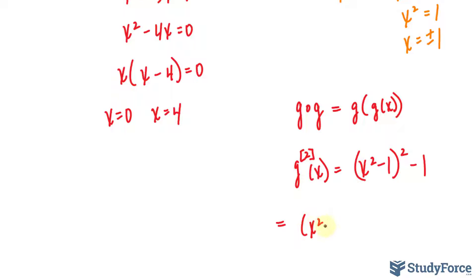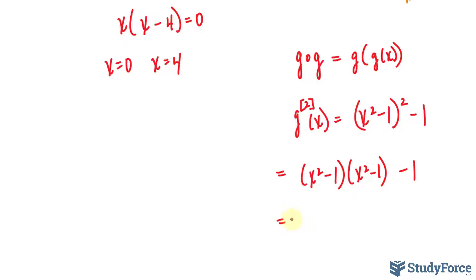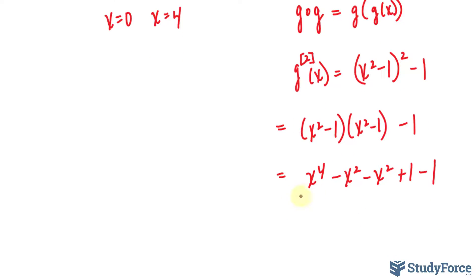Let's simplify. We have x squared minus 1 squared, expanded as x to the power of 4, minus x squared, minus x squared, plus 1, minus 1. The plus 1 and minus 1 cancel, and the two negative x squared terms combine to give minus 2x squared.